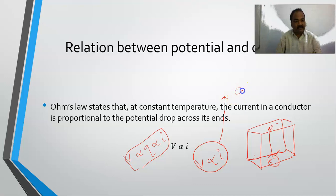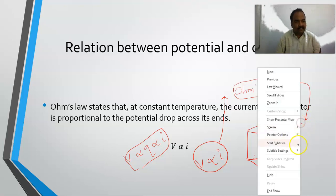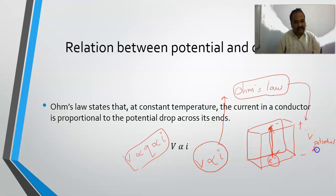In other terms, it is given by the famous scientist Ohm, and it is named after him as Ohm's Law. Now, let us suppose when I am requiring energy to move an electron from here to here — which means that in other terms, I can say that this one has gained some potential and this one has lost some potential. So there exists a potential difference between these two, and this is called as a potential difference.